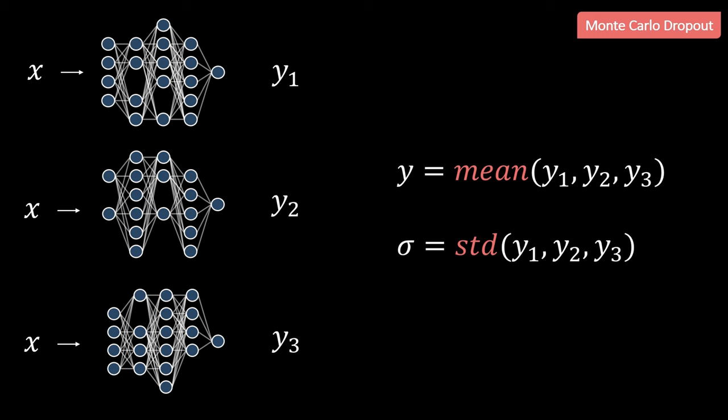MCD can also be seen as an ensemble of different networks with shared weights. Now what we of course can also do is to have an ensemble of networks with separate weights. This brings us to the next method called deep ensembles.